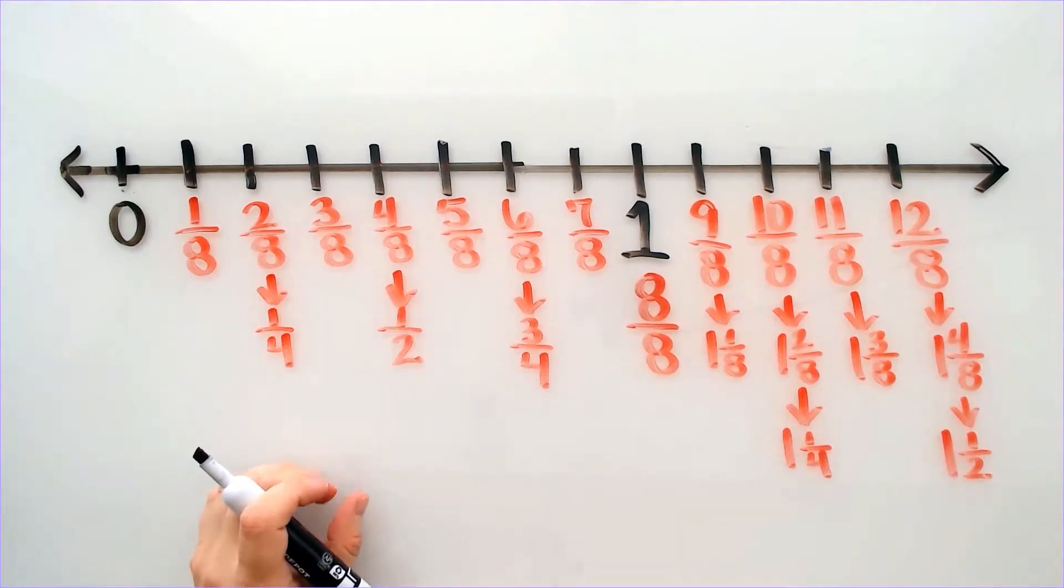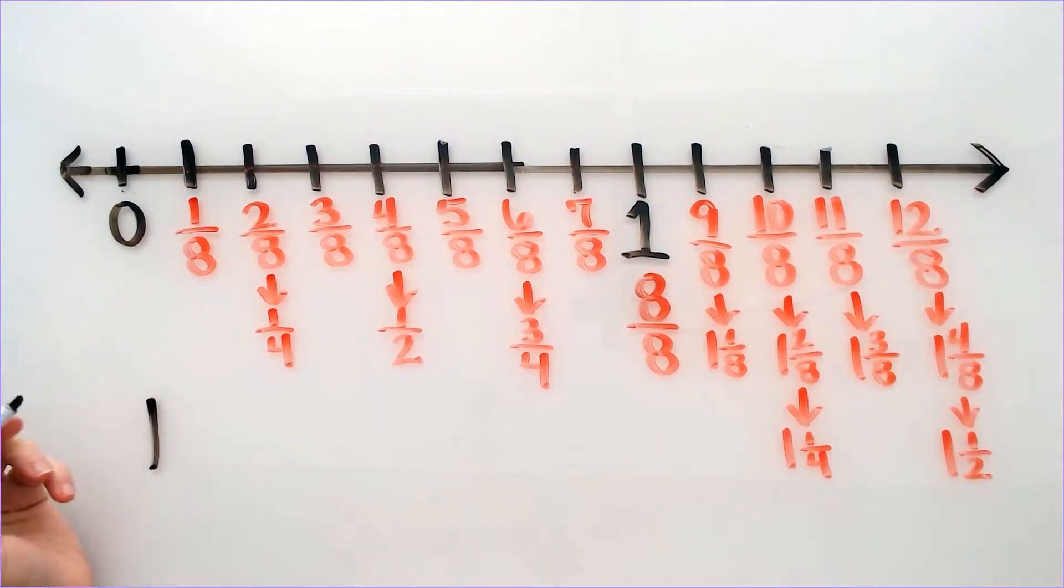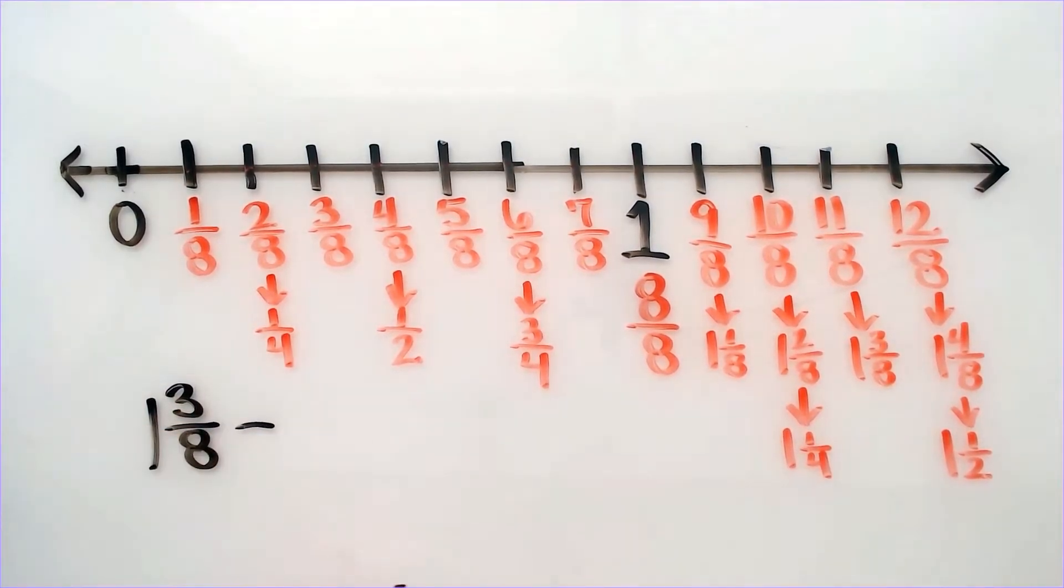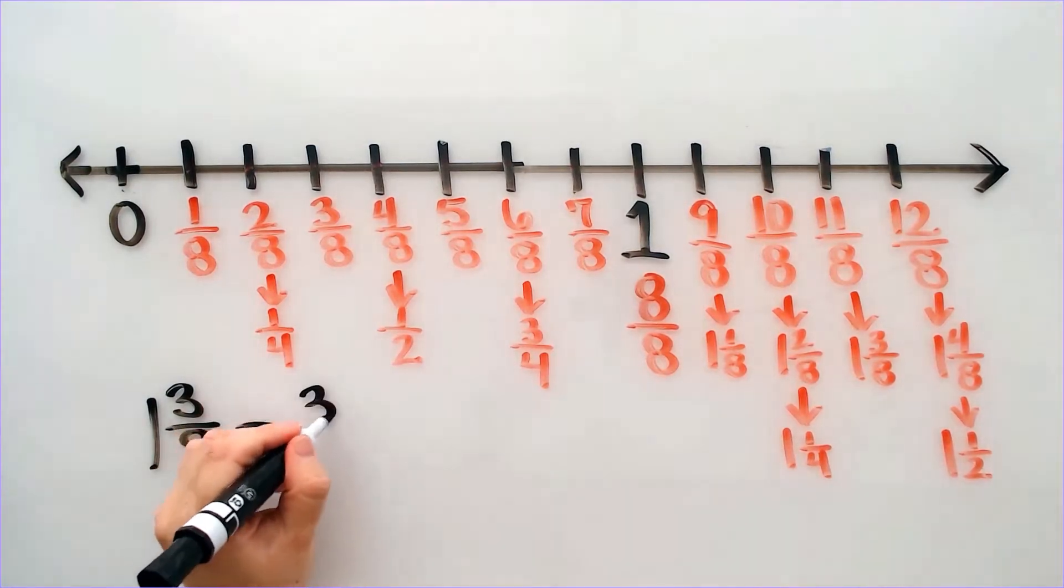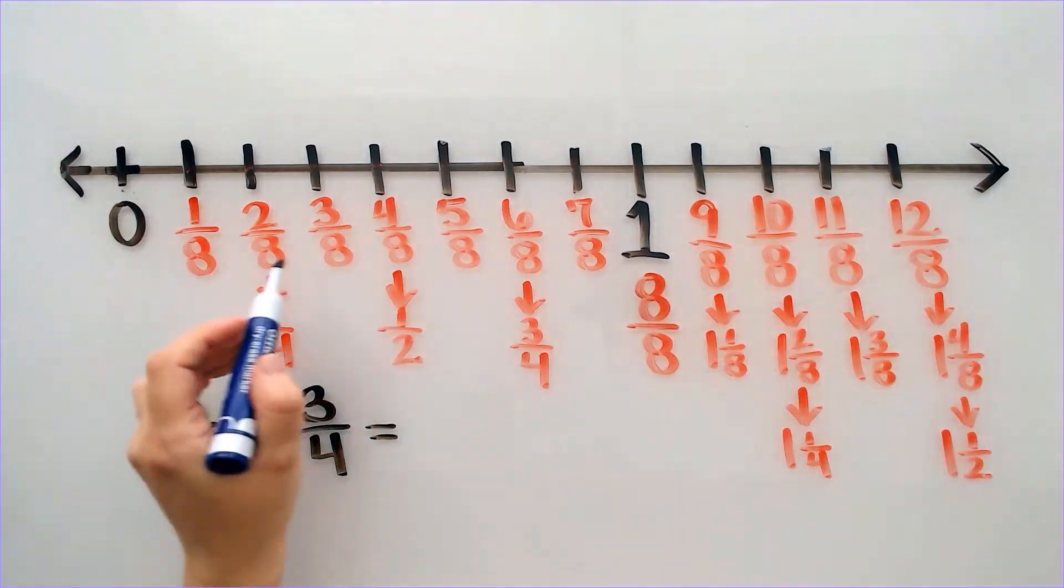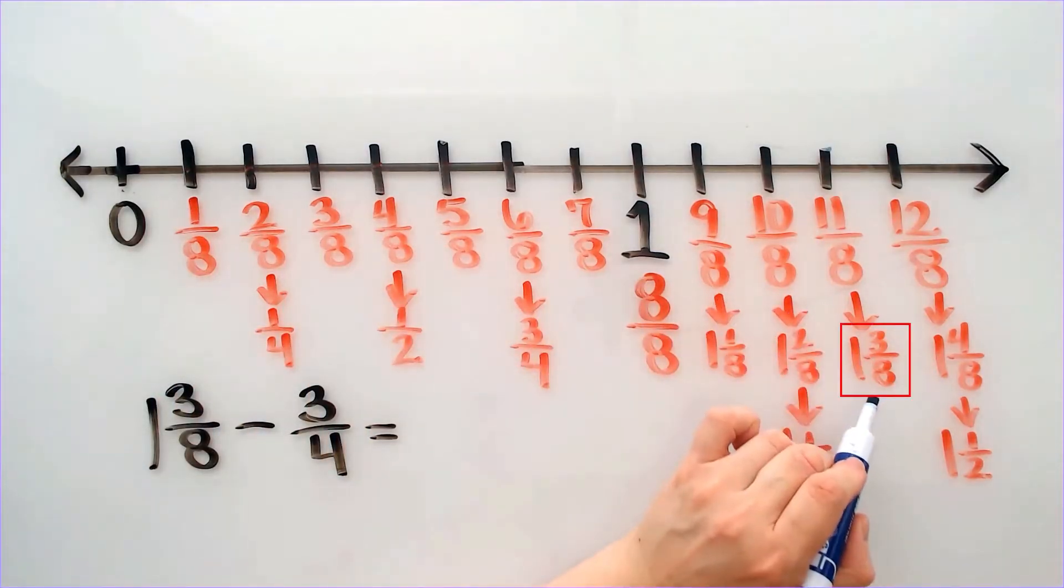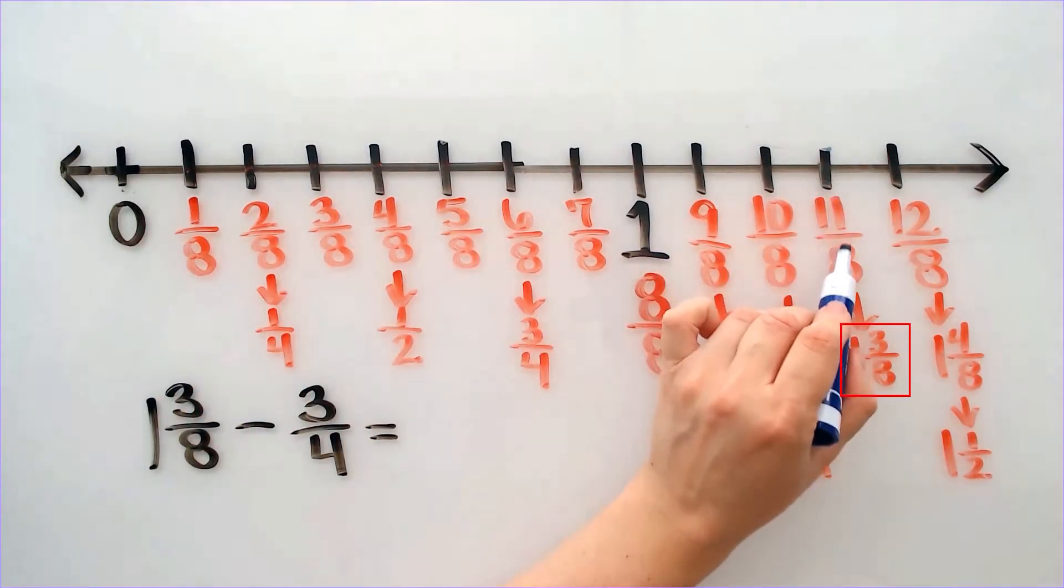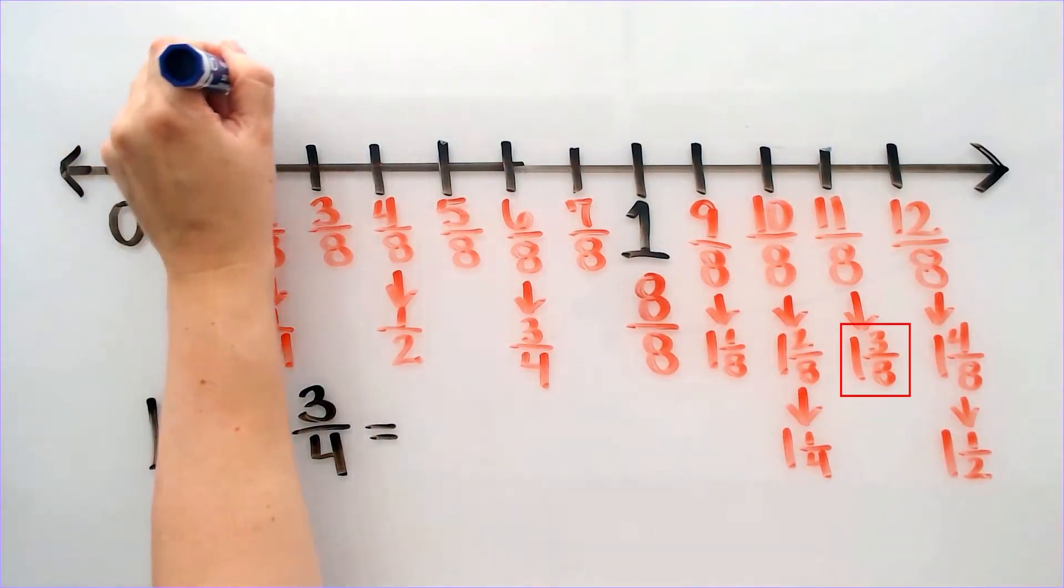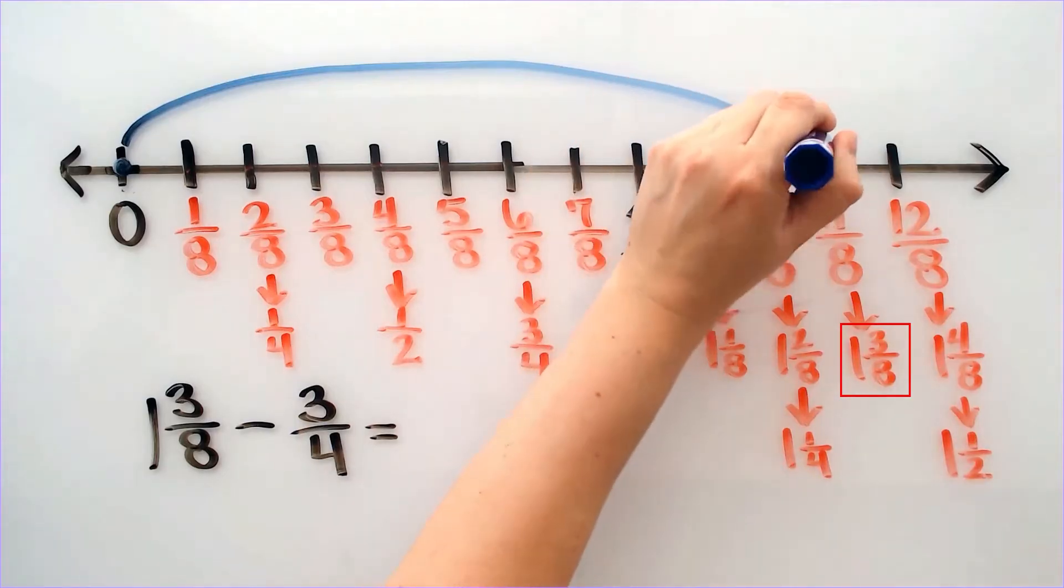So now we can look at some problems that involve adding and subtracting fractions. Let's say that I want to take 1 and 3 eighths and I want to subtract 3 fourths. I will start with the 1 and 3 eighths and locate it on the number line. Now if you look at the number line, I can see 1 and 3 eighths is over here for 11 over 8. So I am going to start at 0 and I am going to jump all the way over to 11 over 8.